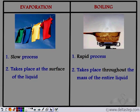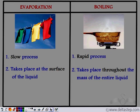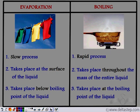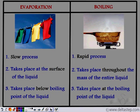Evaporation is a surface phenomenon — it takes place only at the surface. Boiling, however, takes place throughout the bulk of the liquid. The bubbles formed signify that boiling is taking place throughout the bulk, and each and every particle experiences the change. Also, evaporation takes place below the boiling point. The boiling point of water is 100 degrees Celsius, but when you dry clothes the temperature may be 30, 35, or 40 degrees Celsius — much below the boiling point. Boiling occurs only at 100 degrees Celsius. These are the differences between evaporation and boiling.